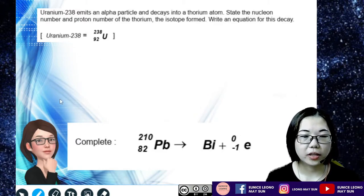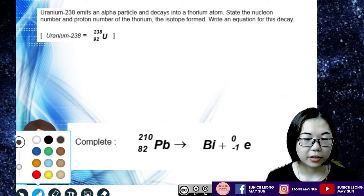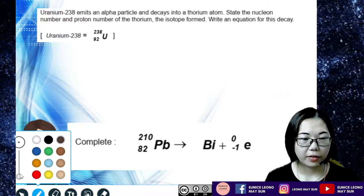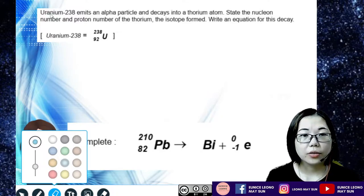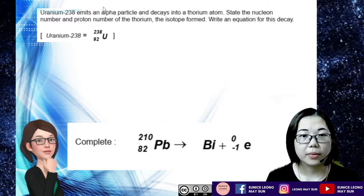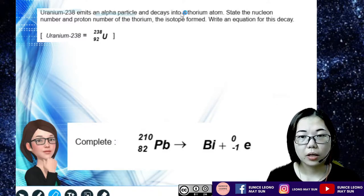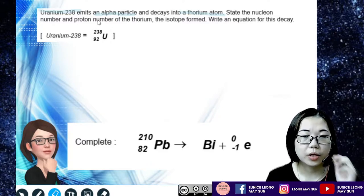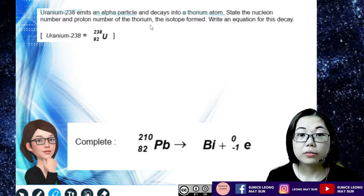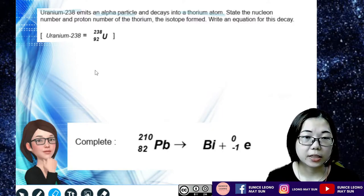A uranium-238 emits out an alpha particle and decays into a thorium atom. State the nuclear number and proton number of the thorium isotope formed. Write an equation for this particular decay.